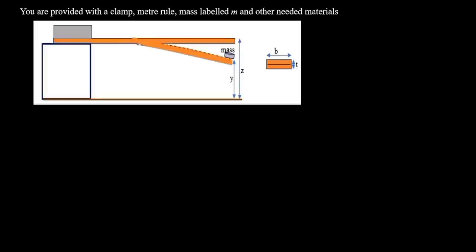The instruction says: having been provided with those items, we are to arrange our set up to look like this. This represents our clamp, and it would hold firmly the meter rule so that we can place our mass here. Before we place that mass, we would first calculate the height of this meter rule. After we place the mass, the weight of the mass would cause a depression. We will then find the height after the mass has been placed, and from the height before and after, we obtain the depression, which is simply Z minus Y.